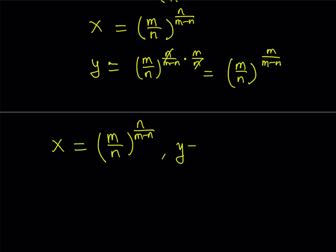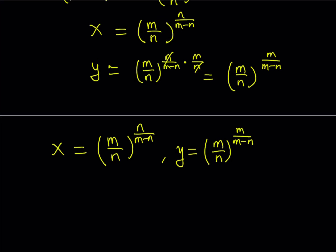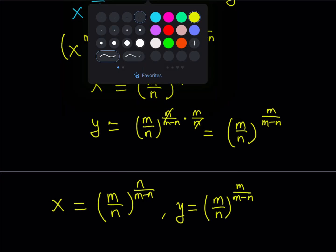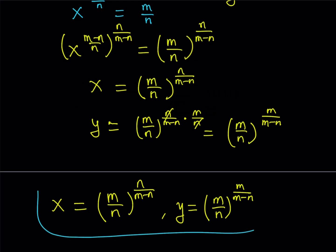And the y is going to be m over n. Pretty much, they have the same base, but their exponents are different. And the exponent here is going to be m over m minus n. Now, by substituting these values into the original equations, you can basically verify that the solutions are going to hold.